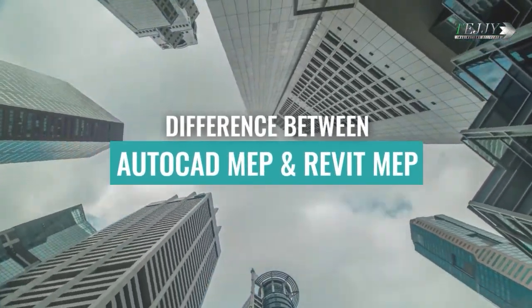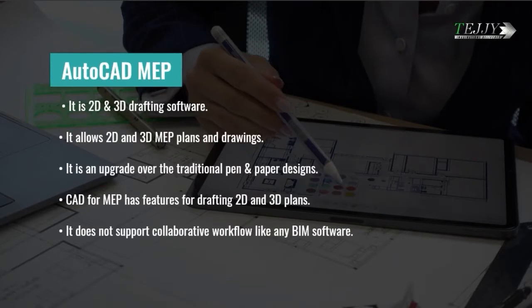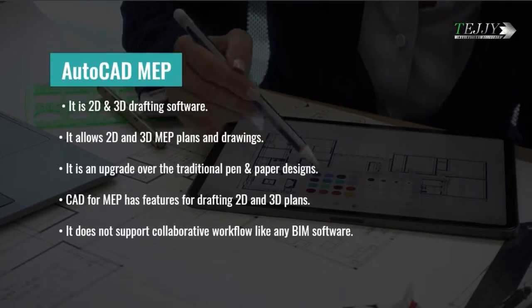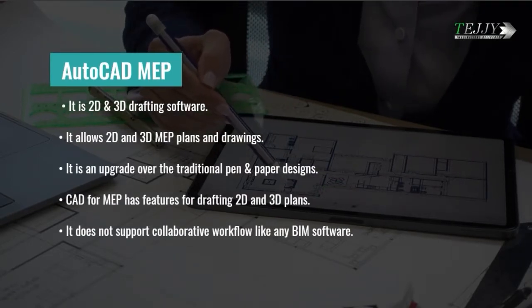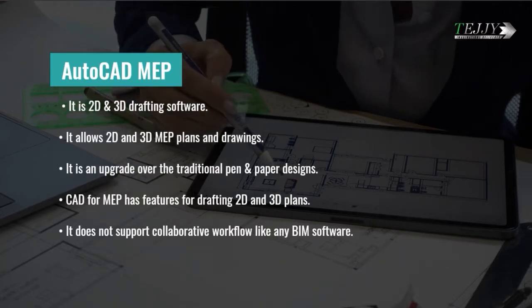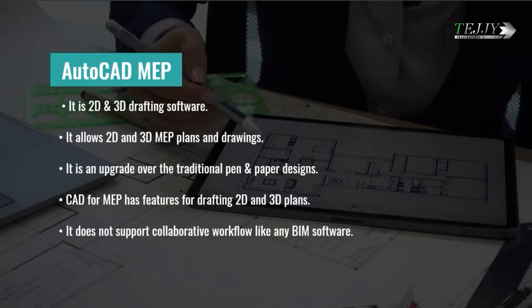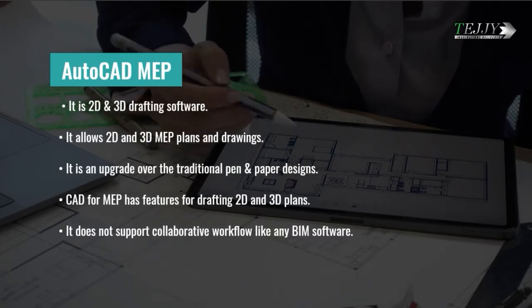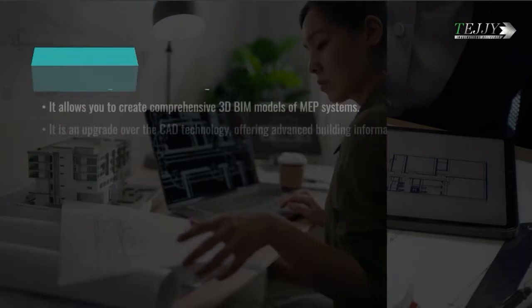Difference between AutoCAD MEP and Revit MEP. AutoCAD MEP is 2D and 3D drafting software. It allows 2D and 3D MEP plans and drawings, and is an upgrade over the traditional pen and paper designs. CAD for MEP has features for drafting 2D and 3D plans, but it does not support collaborative workflow like BIM software does.